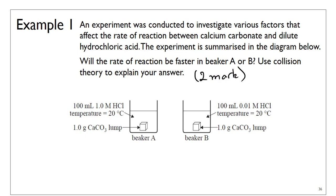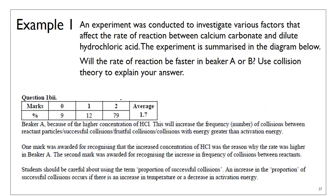Pay attention to the difference between the two beakers. They used the same amount of calcium carbonate, same temperature, and same volume of hydrochloric acid, but Beaker A has 1.0 molar and Beaker B has 0.01 molar. Beaker A uses the more concentrated version of hydrochloric acid, which means the reaction rate in Beaker A will be faster because you have a higher frequency of collision and a higher chance of a successful collision with the correct orientation.